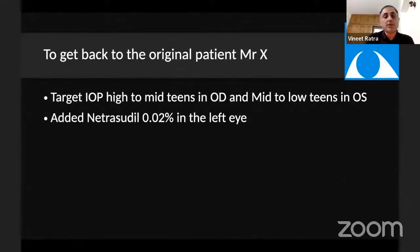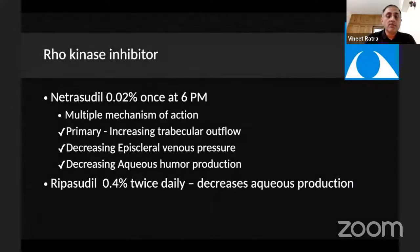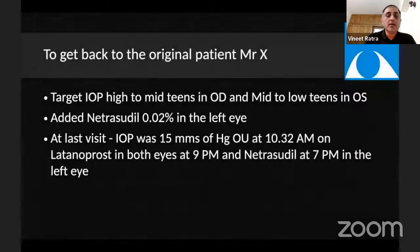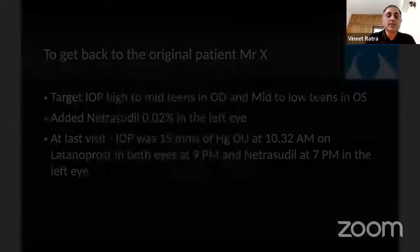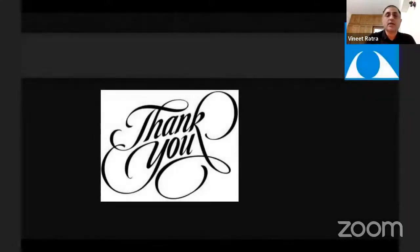Getting back to our original patient, we added netarsudil in his left eye since our target was mid to low teens. This is the rho-kinase inhibitor. On his last visit, his intraocular pressure was 15 mmHg with latanoprost in both eyes and netarsudil at 7 PM in his left eye.